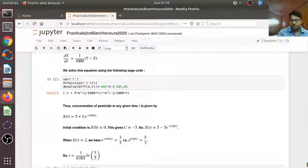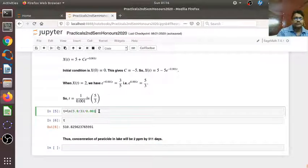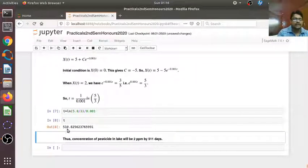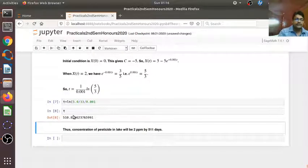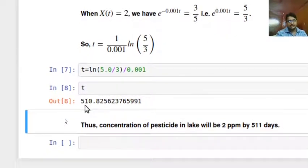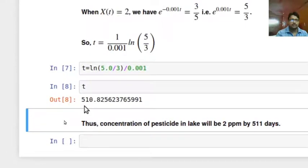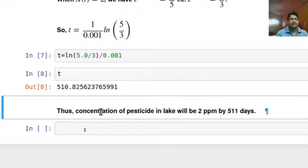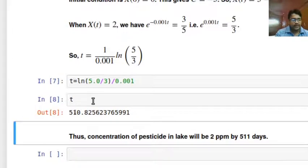So t equal to 510.82. This value of t is in days because initially our rate of flow was given in meter cube per day. So this value of t, or the unit of this time here, is days. Thus the concentration of pesticide in lake will be 2 parts per million by 511 days. We are taking 510.82 approximately as 511 days. That is how we have solved this lake pollution compartment model problem.